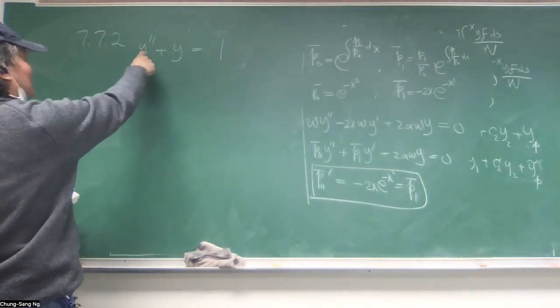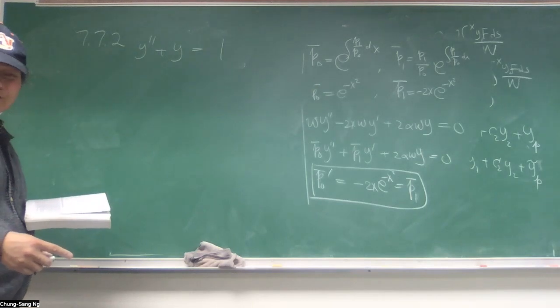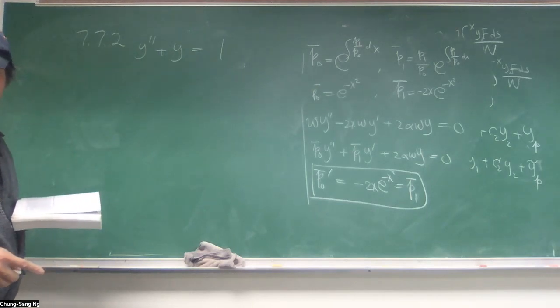So the homogeneous equation is y double prime plus y equals zero, right? You know that is a simple harmonic oscillator.